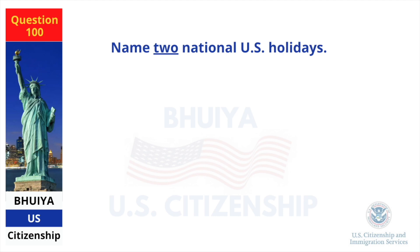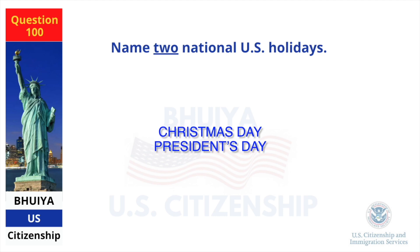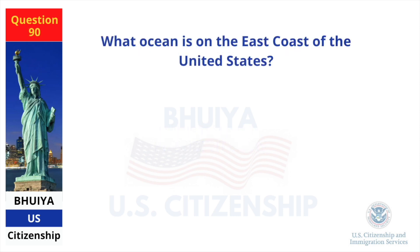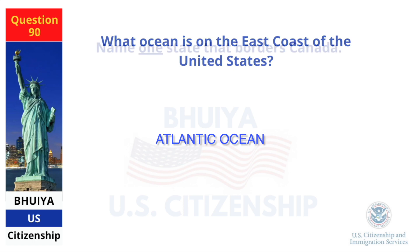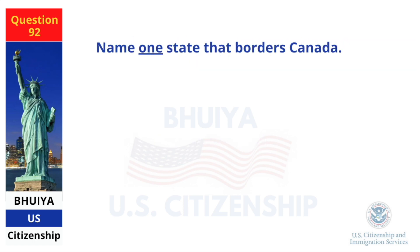Name two national US holidays. Christmas Day and President's Day. What ocean is on the east coast of the United States? Atlantic Ocean. Name one state that borders Canada. New York.